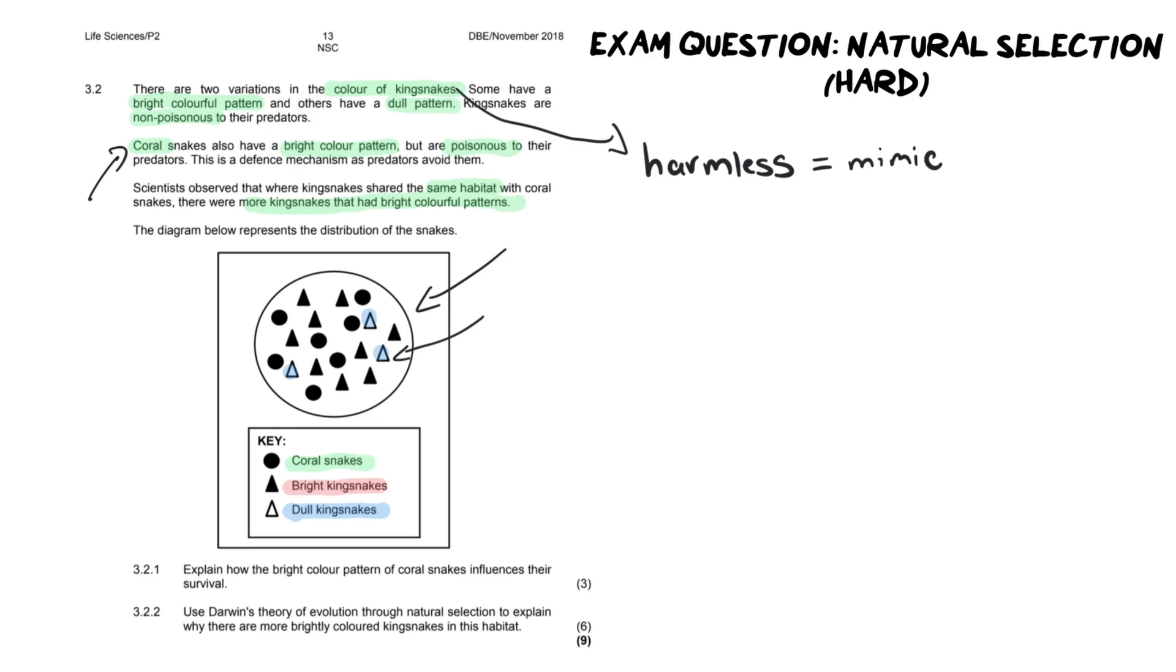That probably has something to do with the fact that predators can't tell the difference between a coral snake and a king snake. So now with that in your mind, these harmless snakes are mimicking these poisonous snakes. How would that play into evolution? Well, if you think about it, natural selection would mean that the snakes that are brightly colored are more likely to survive, while those dull snakes are less likely to survive. You see where I'm getting at?